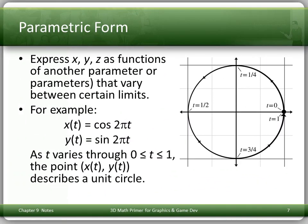Parametric form, on the other hand, expresses your point coordinates x, y, and z as functions of another parameter or parameters that vary between certain limits. For example, consider this pair of functions: x(t) = cos(2πt) and y(t) = sin(2πt), where t is our new parameter. Notice we're expressing x and y as functions of the new parameter t, and t varies from 0 through 1. As t varies from 0 to 1, the point (x(t), y(t)) describes a unit circle.